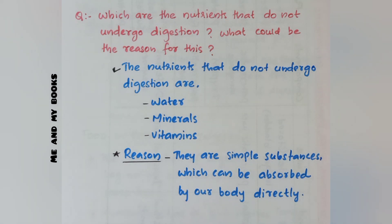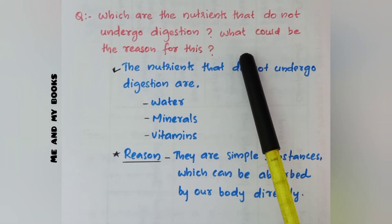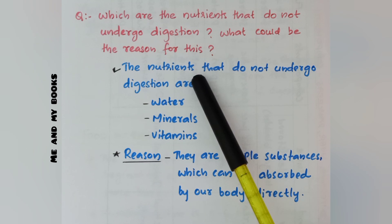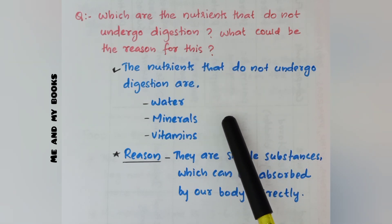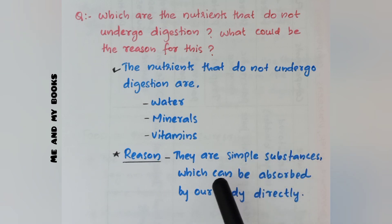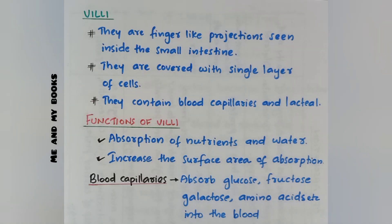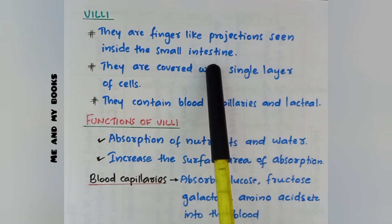Which nutrients do not undergo digestion and why? We studied six nutrients but only three had end products. Water, minerals, and vitamins do not undergo digestion because they are simple substances that can be absorbed by our body directly, so no digestion is needed.